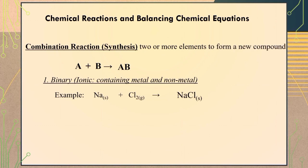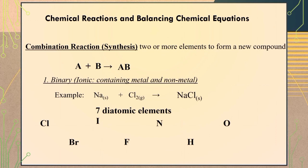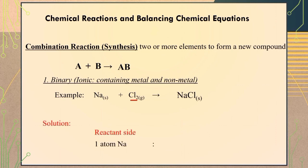In balancing chemical equations we also have to consider the presence of atomic elements in the free state. Free state means alone. These seven diatomic elements — chlorine, bromine, iodine, fluorine, nitrogen, hydrogen, and oxygen — must always bear a subscript of two if they are alone in a chemical equation. By inspection, sodium on the reactant side has one atom, while on the product side we also have one atom of sodium. For chlorine, on the reactant side we have two atoms, while on the product side we only have one atom.